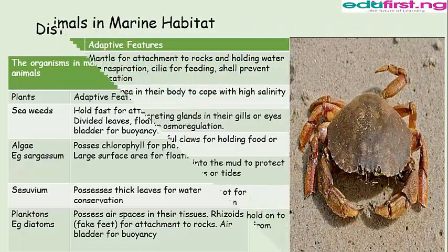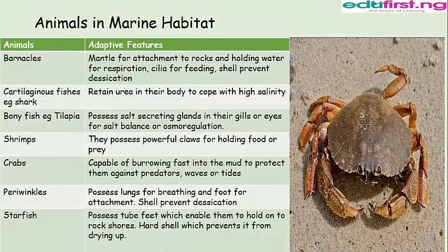Animals and their adaptive features include barnacles, which have a mantle for attachment to rocks and holding water for respiration, and cilia for feeding; their shell prevents desiccation. Cartilaginous fishes, for example sharks, retain urea in their body to cope with high salinity. Bony fish, for example tilapia, possess salt-secreting glands in their gills or eyes for salt balance and osmoregulation. Shrimps possess powerful claws for holding food or prey. Crabs are capable of burrowing fast into the mud to protect against predators, waves, or tides. Periwinkles possess lungs for breathing and a foot for attachment; their shell prevents desiccation. Starfish possess tube feet which enable them to hold on to rock shores, and a tough outer layer which prevents drying up.